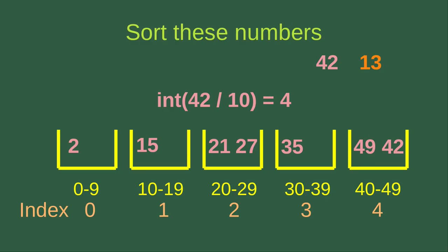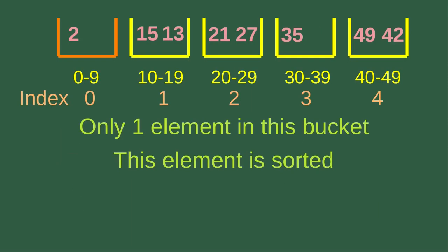For 42: 42 divided by 10 gives 4.2, and the integer part is 4, so 42 also goes to bucket index 4. The final value is 13: 13 divided by 10 gives 1.3, and the integer part is 1, so 13 goes to bucket index 1, which handles numbers between 10 and 19.